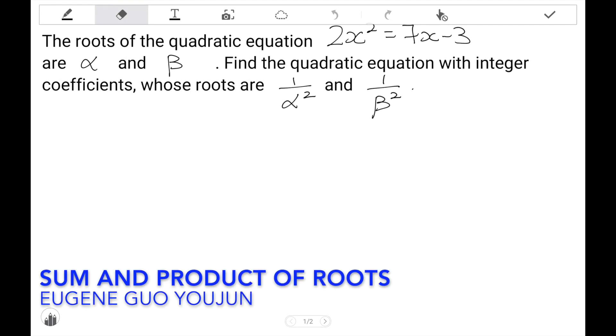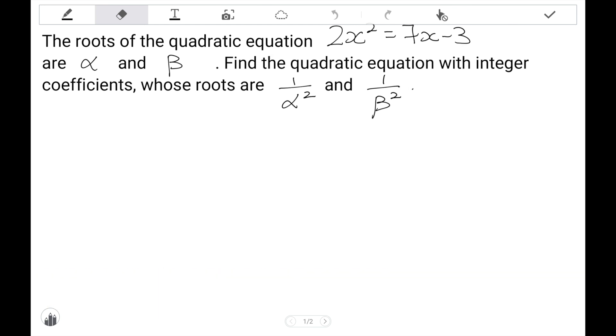Hello, and welcome to our next lesson on roots of quadratic equations, or alpha and beta. In this lesson, we'll tackle a slightly harder question. When we're given quadratic equations with roots of alpha and beta, how do we find a new quadratic equation with different roots of 1 over alpha squared and 1 over beta squared?